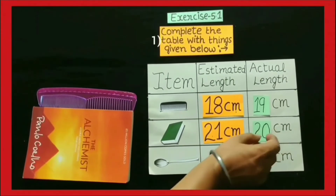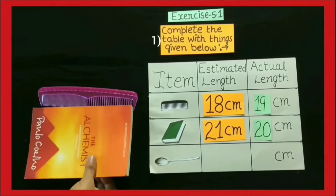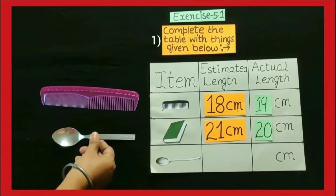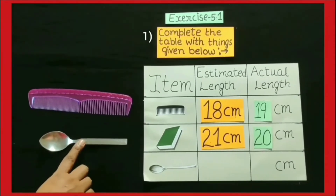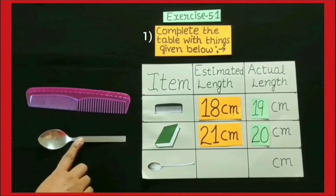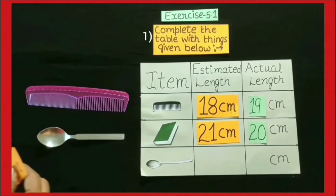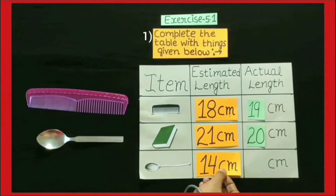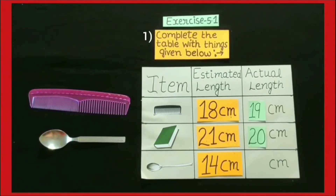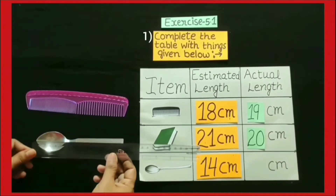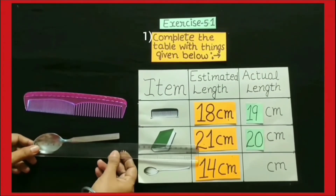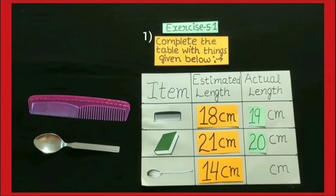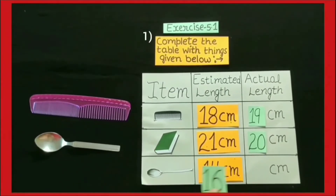Now students, the next thing is spoon. To find out the actual length of the spoon, we have to measure the spoon with the help of a scale. By measuring the spoon with the help of a scale, its actual length is 16 cm.